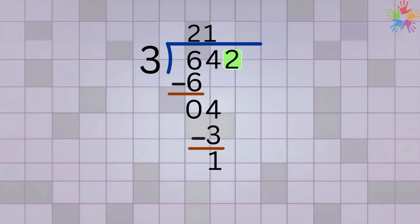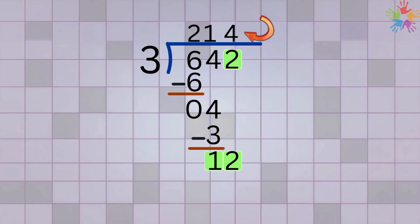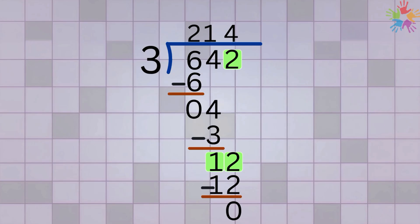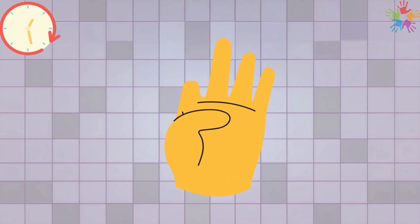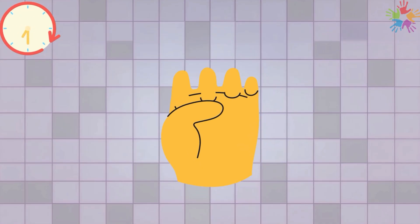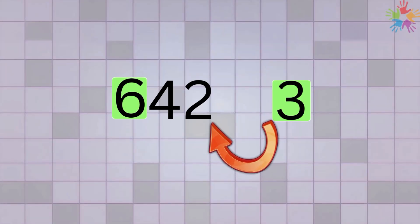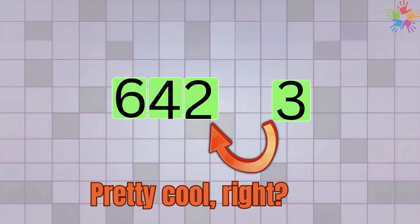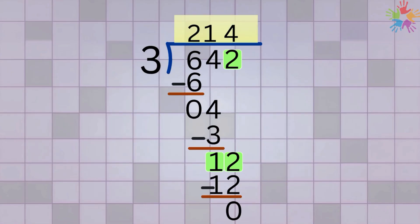Now we bring down the last number, 2, to team up with the 1 — now we have 12. We ask: how many times does 3 go into 12? That's 4 times, so we place 4 on top. Multiply: 4 times 3 equals 12. Subtract: 12 minus 12 equals zero and we're done! Our quotient is 214 — that's our final answer for 642 divided by 3.